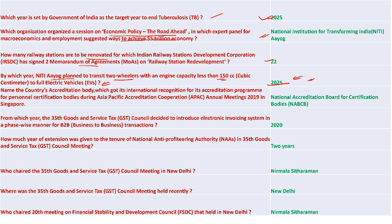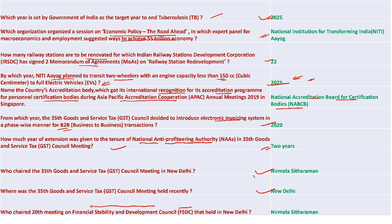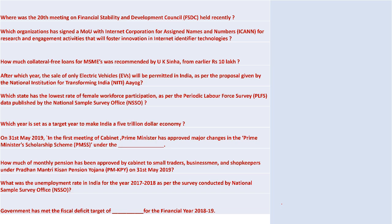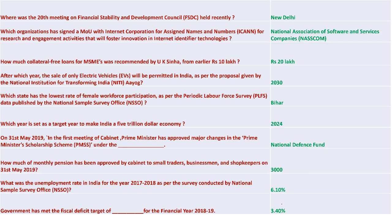National Accreditation Board for Certification Bodies (NABCB) received international recognition for its accreditation program during the Asia Pacific Accreditation Corporation annual meeting. From 2020, the 35th GST Council decided to introduce an electronic invoicing system in a phased manner for B2B transactions. The National Anti-Profiteering Authority's tenure was extended by two years in the fifth GST Council meeting headed by Nirmala Sitharaman in New Delhi. The Financial Stability and Development Council (FSDC) meeting was also chaired by the Finance Minister.